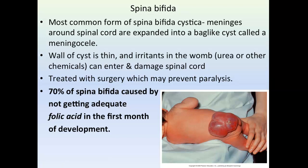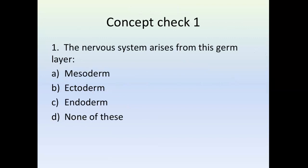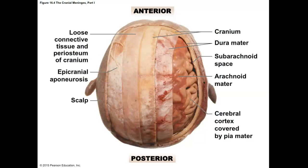We talked about neural tube defects and the regions of the neural tube. There will be concept checks throughout this PowerPoint, with answers provided at the very end. Now let's talk about the meninges. Your brain and spinal cord are covered by three protective layers of tissue collectively called the meninges.